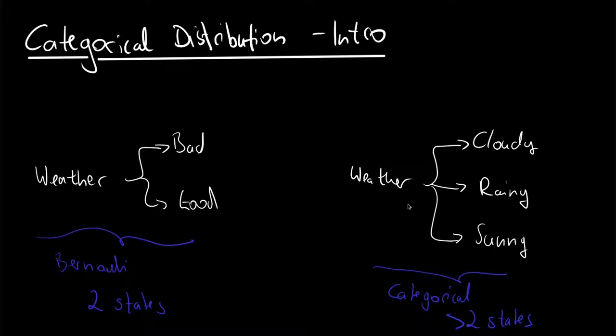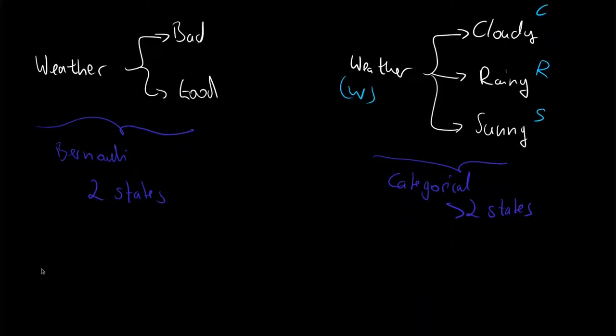So in the intro we've seen that we need a categorical in order to assess the weather in more detail. So we say whether the weather is cloudy, rainy, or sunny. And if we call our weather shorthand W, and we call cloudiness C, rainy R and sunny S, then we know that our weather can take the states cloudy, rainy, or sunny.